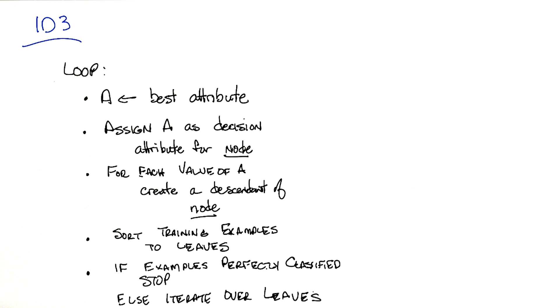Picking the best attribute in turn for the training examples that were sorted into that leaf. And you keep doing that, building up the tree until you're done. So that's the ID3 algorithm.